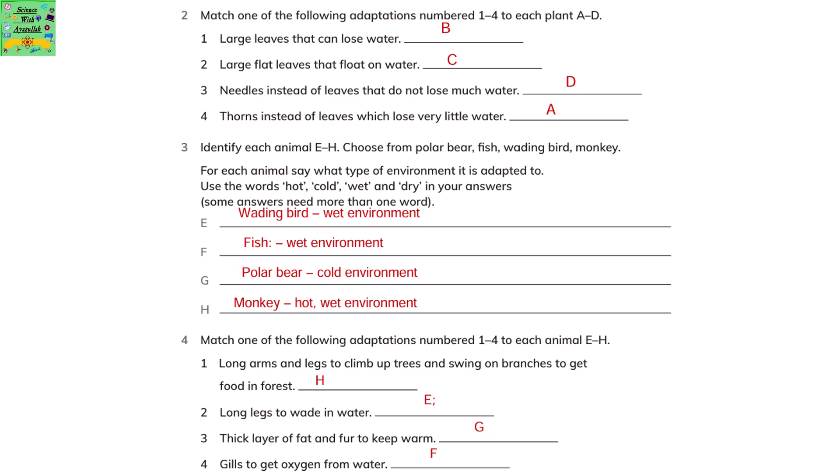Identify each animal E to H. Choose from polar bear, fish, wading bird, monkey, etc. For each animal, say what type of environment it is adapted to. Use the words hot, cold, wet and dry in your answers.